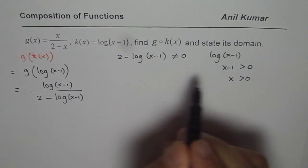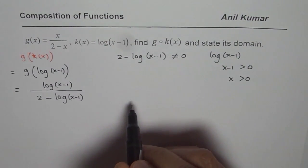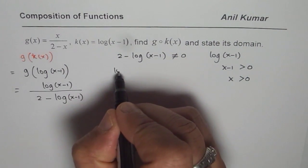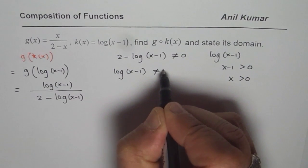Let us check this part. x could be greater than 1 but then 2 minus log(x-1) cannot be 0. So let us have, this is an additional restriction. So let us solve.